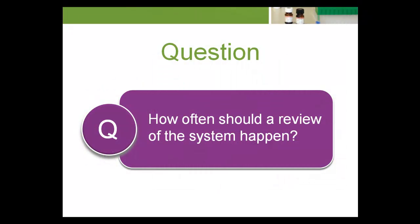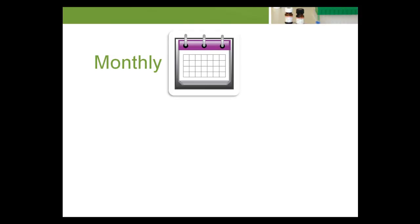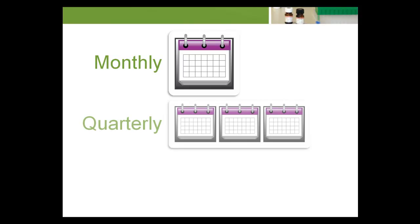How often should a review of the system happen? Ideally, a review should be performed each month. However, if a laboratory does not have the resources to complete a monthly review, a quarterly review should be performed.